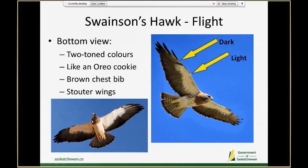Swainson's hawks also have a chestnut bib that has a pretty strong line cutting between it and the rest of the underparts, which is very distinctive in flight or when they're perched. One of the finer differences between Swainson's hawks and Ferruginous hawks are the stouter wings that Swainson's have compared to the longer, more extended wings on a Ferruginous hawk.